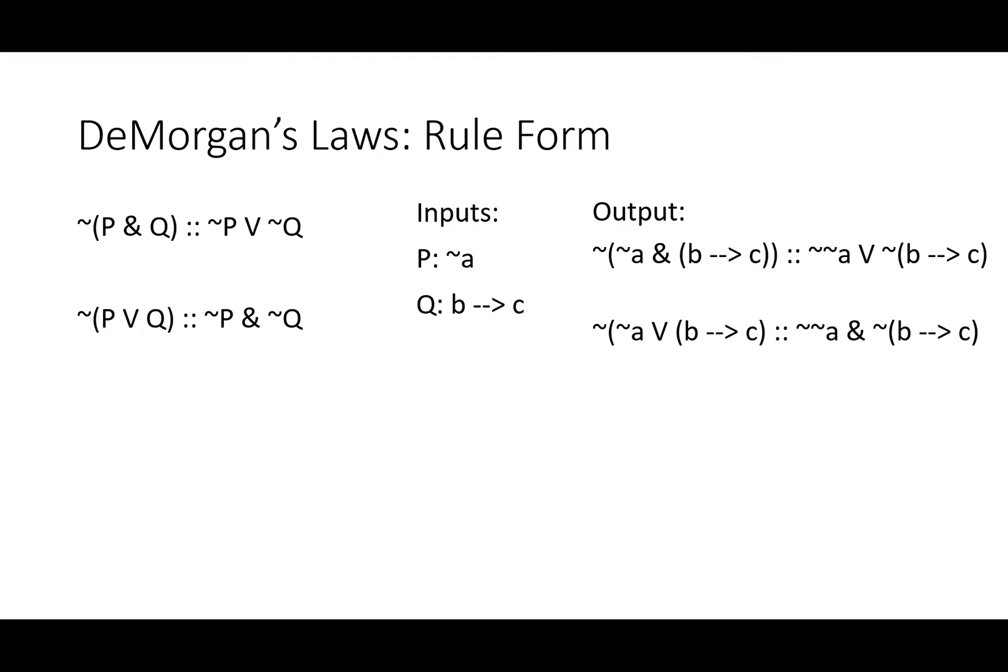When things get a little bit more complicated, we can still do a DeMorgan's. We've substituted not A in for P. Notice how on the right side in both rules, it becomes not not A. And we've substituted if B then C in for both rules. Notice again, the right side, the whole thing is negated. Not just B or C, but if B then C is what gets negated.